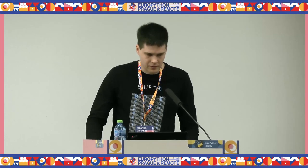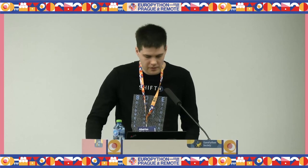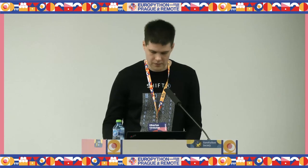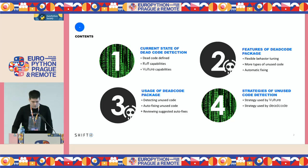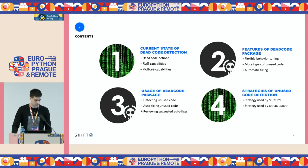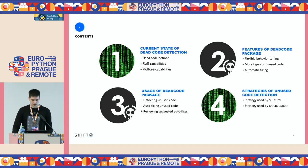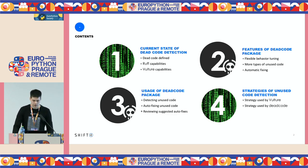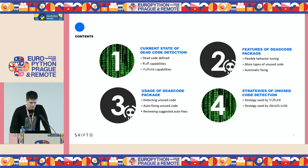Today I'm going to present a tool which I'm still developing. It's called .code and it is used to find, fix, and use Python code. My presentation consists of four parts. Firstly, I will present the current state of dead code detection using existing tools. Secondly, I will provide a set of features of the .code package. Thirdly, I will show how to use it. And finally, I will compare two different strategies of detecting unused code.